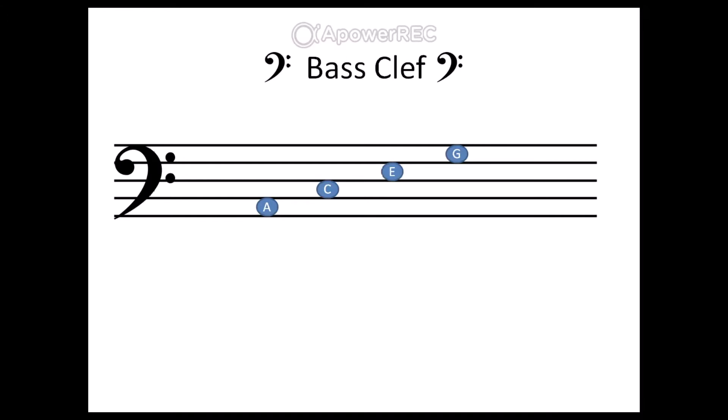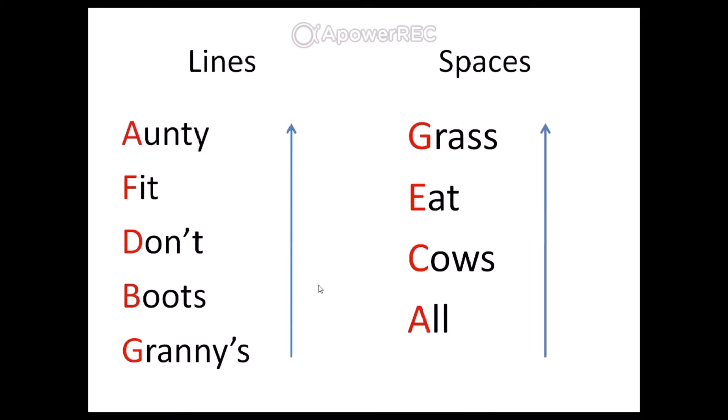To remember which note is on which line or which space, we need to learn two rhymes. For the lines, starting at the bottom, we say: Granny's Boots Don't Fit Auntie. And for notes in the spaces, again starting from the bottom: All Cows Eat Grass.